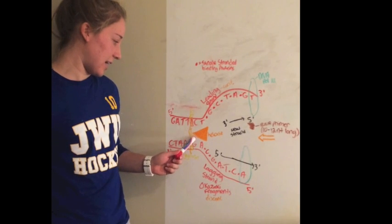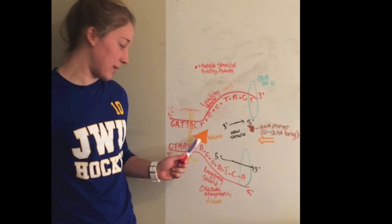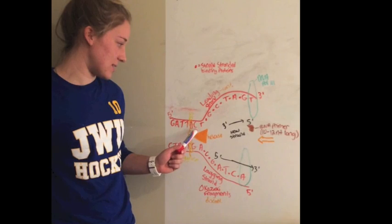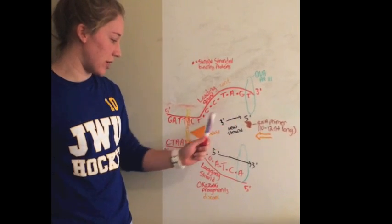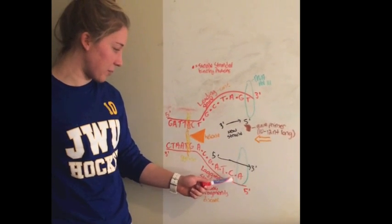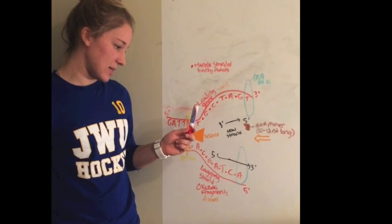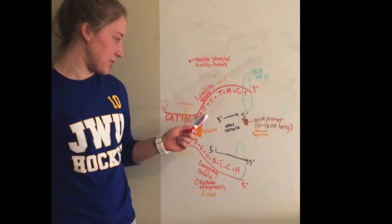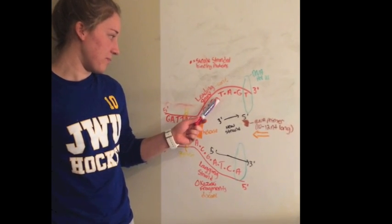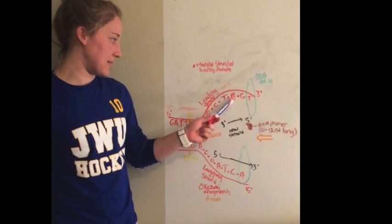DNA helicase, its function is to separate the strands of the double helix which creates these two strands here. The purpose of single-stranded binding proteins is to keep DNA strands separated so you can see it between these bases here.